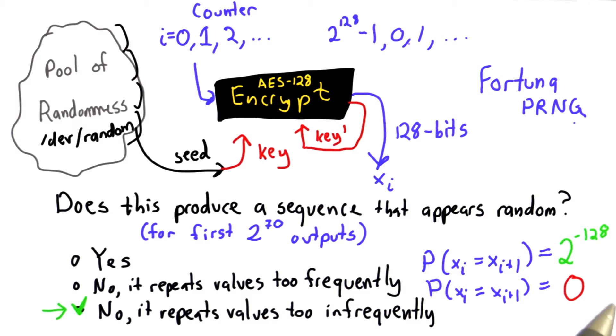This is essentially what the Fortuna pseudo-random number generator does, and that's one of the more popular, widely used ones. It does use this rekeying to avoid this apparently non-random property, and it uses multiple pools of randomness selected in a way that makes it very hard for an attacker to control what the seed is, even if the attacker can control one or a few of the pools of randomness.